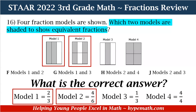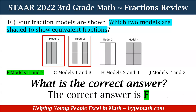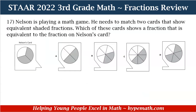So what is our correct answer? Looking at our answer choices to see which one shows model 1 and model 2 — since we've determined those are the two models with equivalent fractions — is it F: models 1 and 2, G: models 1 and 3, H: models 2 and 4, or J: models 2 and 3? Our correct answer is F. Models 1 and 2 are the two models shaded with the same value, and they are equivalent fractions. Great job. Now let's move to question number 17.